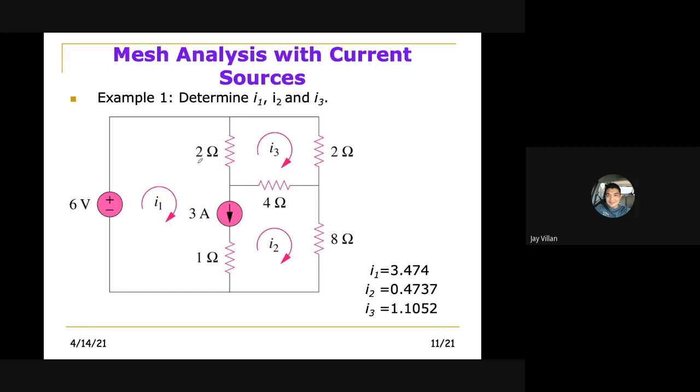So in this case now we have three meshes: i1, i2 mesh currents, and i3. If you notice, this current source exists between mesh one and mesh two. Therefore this is a super mesh.